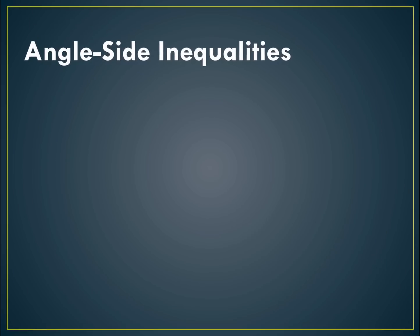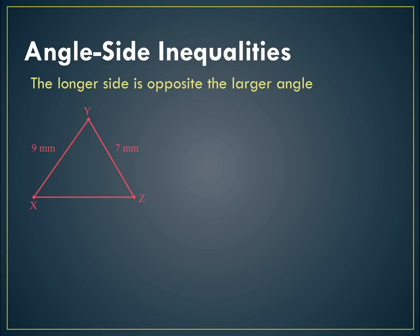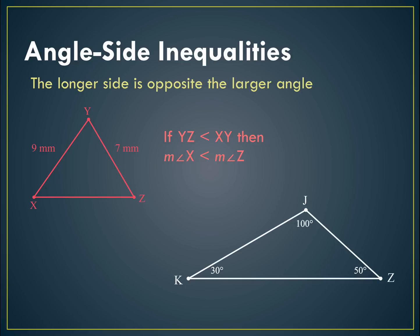So how do we use that? Because the longer side is opposite the larger angle, or conversely the smaller side is opposite the smaller angle: if YZ is less than XY, we know that angle X is less than angle Z. In the same way, because angle J is greater than angle K, we know that KZ is greater than JZ.